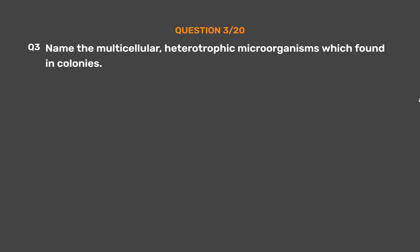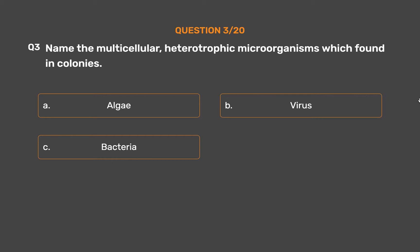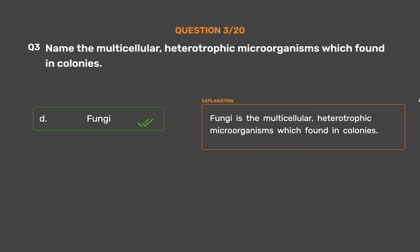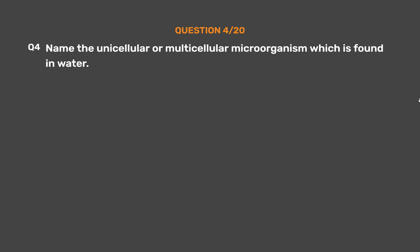Question number 3. Name the multicellular, heterotrophic microorganism found in colonies. Option A: Algae. Option B: Virus. Option C: Bacteria. Option D: Fungi. The correct answer is Option D, Fungi. Fungi are the multicellular, heterotrophic microorganisms found in colonies.